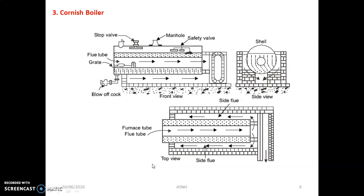The next type of fire tube boiler is the Cornish boiler. As far as construction is concerned, it is quite easy. From the side view, you can see that a brick structure supports one cylindrical shell, and only a central hole is provided — that central hole is the flue tube. Only a single tube is used, through which the combustible gases from fuel combustion continuously flow.